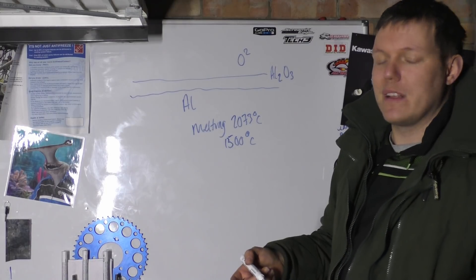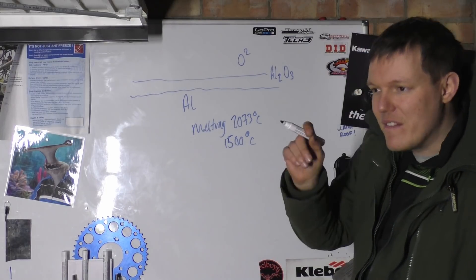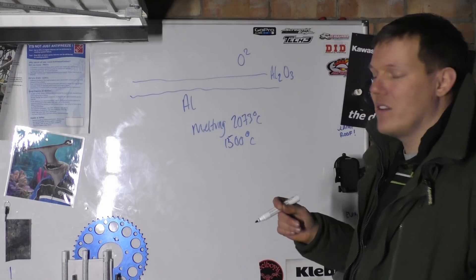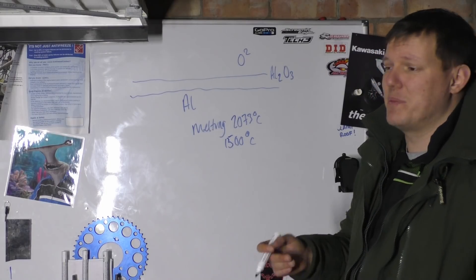The reason why your pistons will melt a lot lower than that is because it's a very thin layer, this is an oxidized layer basically, it's basically aluminum rust.